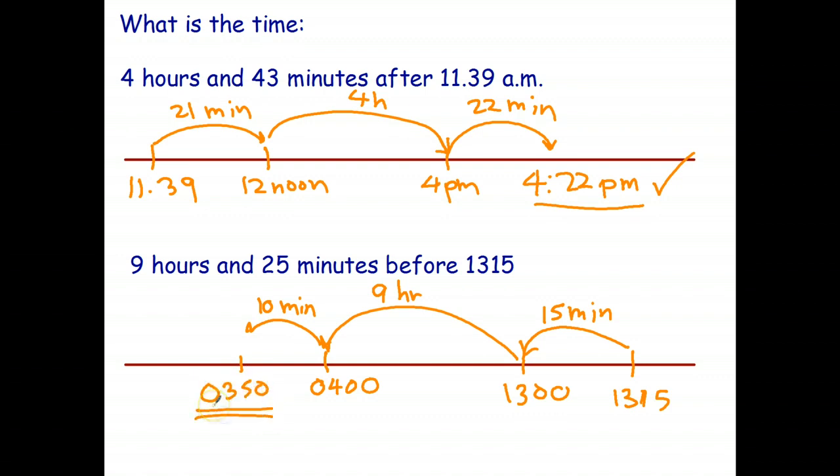So, there's the time in 24-hour time. 9 hours and 25 minutes before 13.15. And just to finish off, using the blank timeline is just one way to do questions like this. Whenever I ask students how they do these sort of questions, I usually get three or four good techniques. So, you don't have to use my technique. If you've got one that works for you, stick with that.